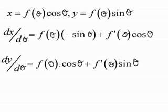dx d theta is found using the product rule. The first times the derivative of the second, plus the second times the derivative of the first. We can also find dy d theta using the product rule. The first times the derivative of the second, plus the second times the derivative of the first, and then we're ready to find dy dx.